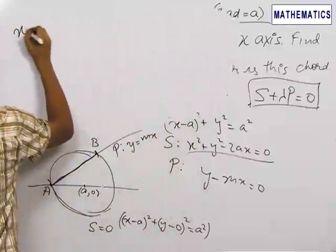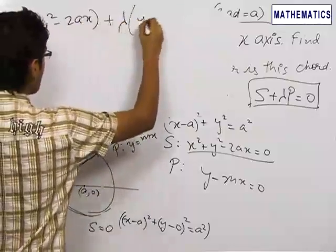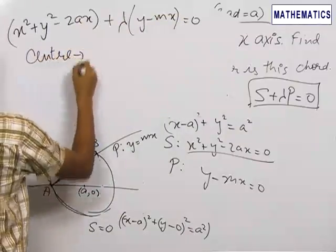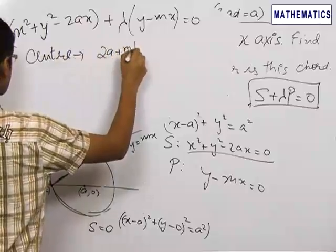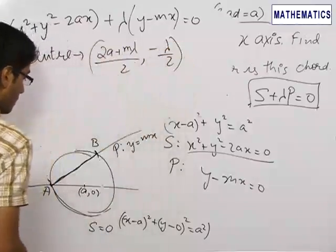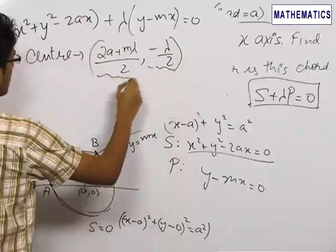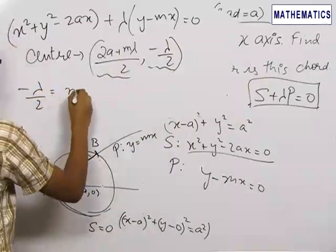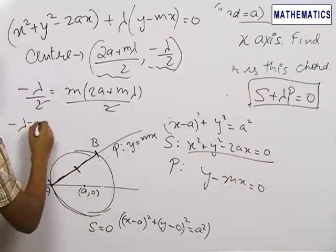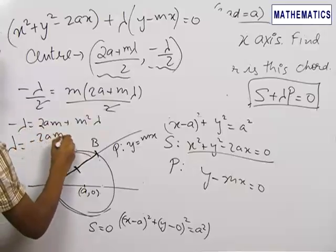Putting into that equation, the circle will be x squared plus y squared minus 2ax plus lambda times (y minus mx) equals 0. The center of this circle can be found to be (2a plus m·lambda)/2 comma minus lambda/2. Now, since the center lies on the line y equals mx, its y-coordinate equals m times its x-coordinate. So minus lambda/2 equals m times (2a plus m·lambda)/2, which gives lambda equals minus 2am upon (1 plus m squared).